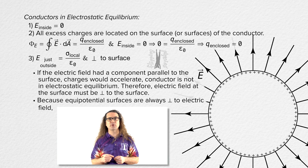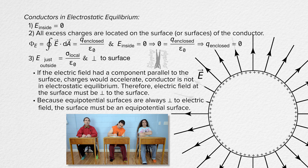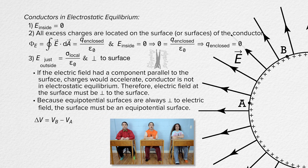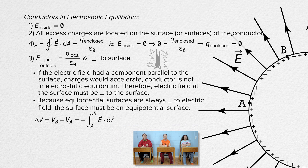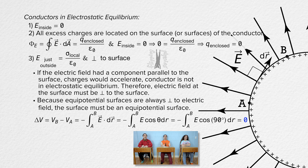Because equipotential surfaces are always perpendicular to the electric field, the surface of a conductor in electrostatic equilibrium must be an equipotential surface. You could also determine the electric potential difference between two points a and b on the surface of a conductor in electrostatic equilibrium. That equals the negative of the integral from point a to point b of the dot product of the electric field and the infinitesimal linear displacement dr. The electric field is always at a right angle to the surface, which means the angle between the electric field and the direction of dr along the surface always equals 90 degrees. The cosine of 90 degrees equals zero, so the electric potential difference between any two points on the surface equals zero — which is the definition of an equipotential surface.